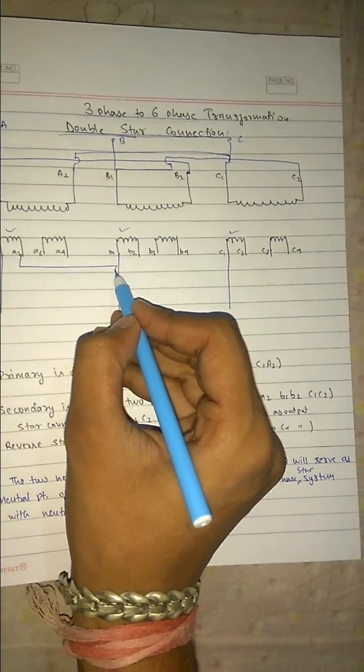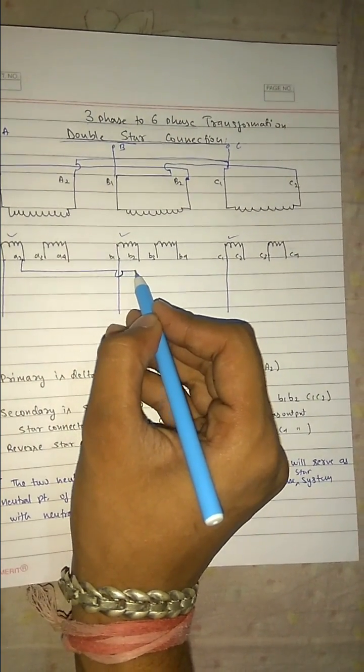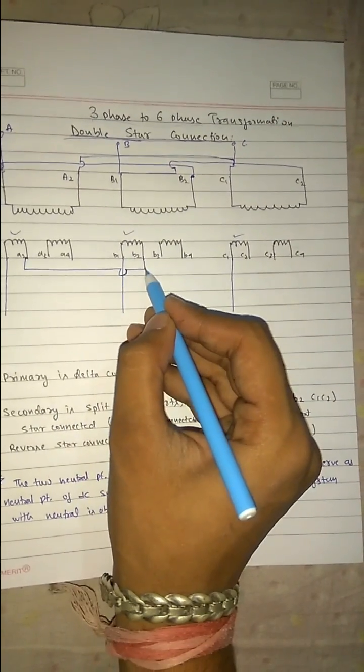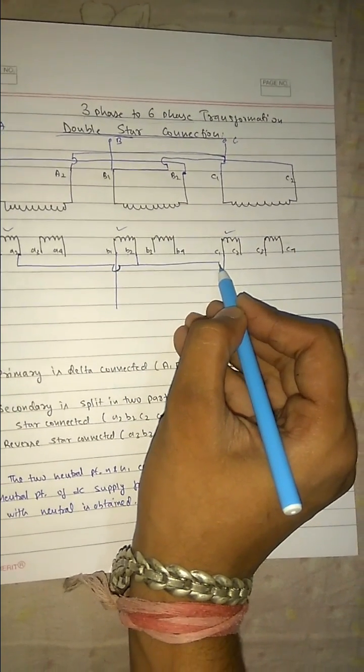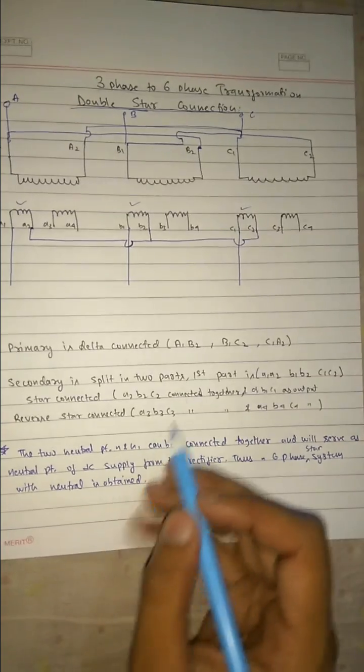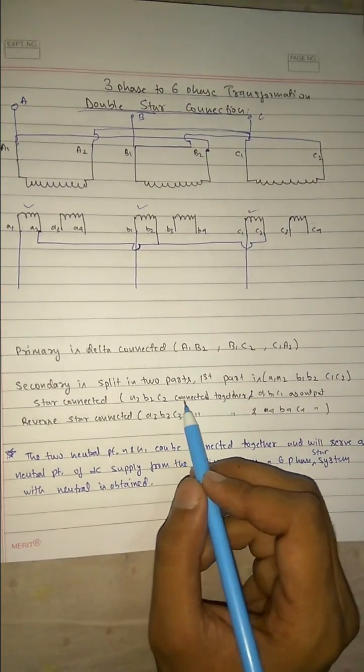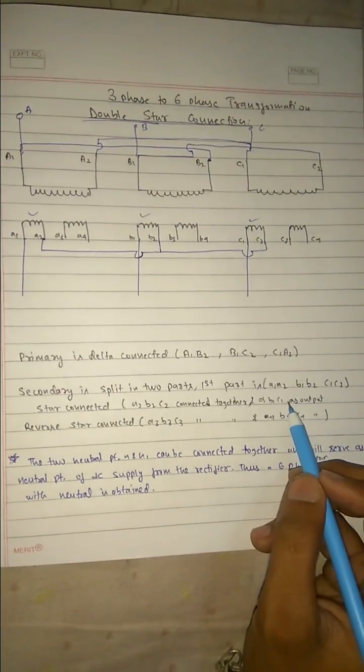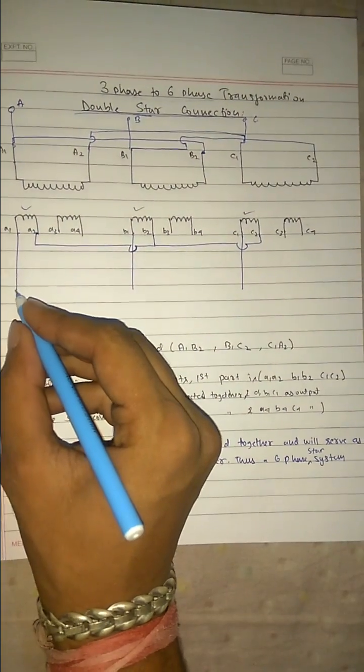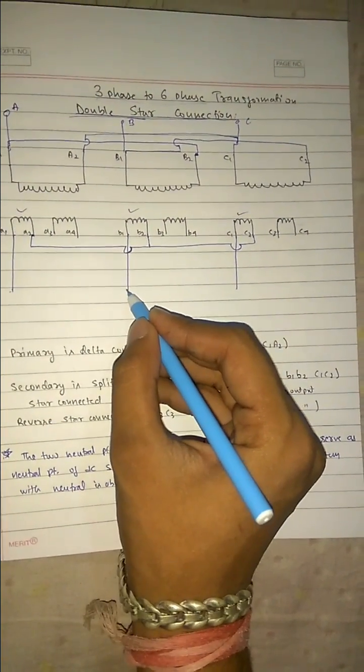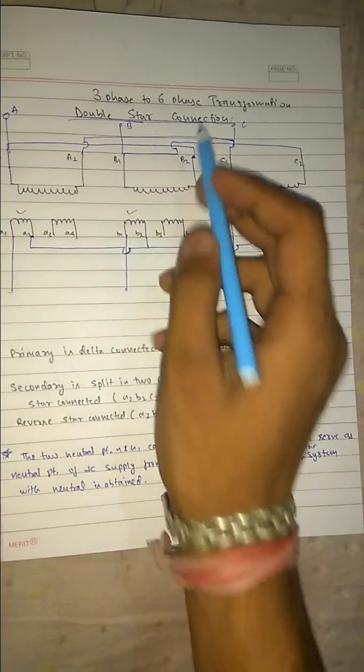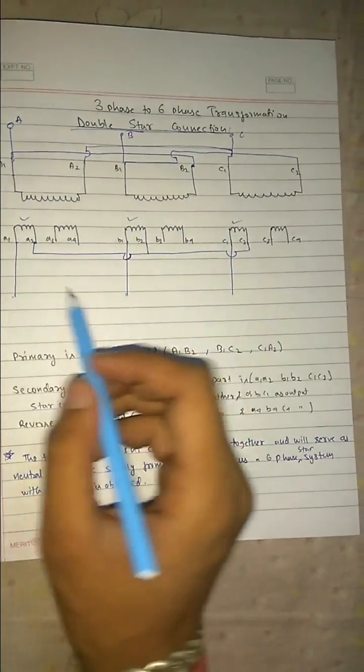a2 with b2, and b2 with c2. So a2, b2, c2 are connected together, and a1, b1, c1 we have got as our output terminals. So we have seen from 3, we have already got another 3.